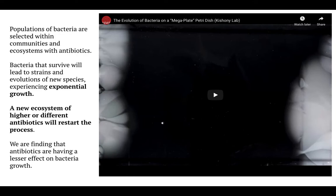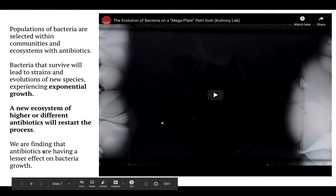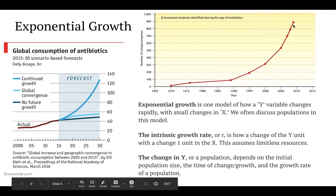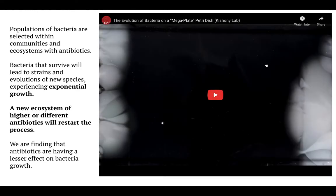This is a video from Harvard — a really cool experiment looking at populations of bacteria being selected within communities based on antibiotic densities. The bacteria that survive an initial dosage of antibiotics will evolve into a new strain that experiences exponential growth, then encounter a more concentrated antibiotic environment, and the process starts over. What we're finding is that bacteria are developing more and more resistance, with an exponential growth in strains that can fight our antibiotics — very worrisome for future human health.